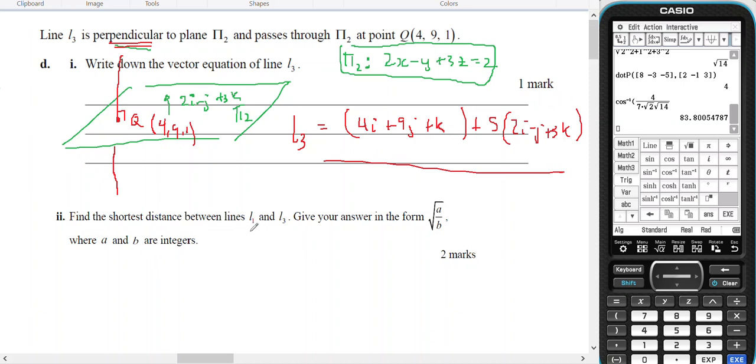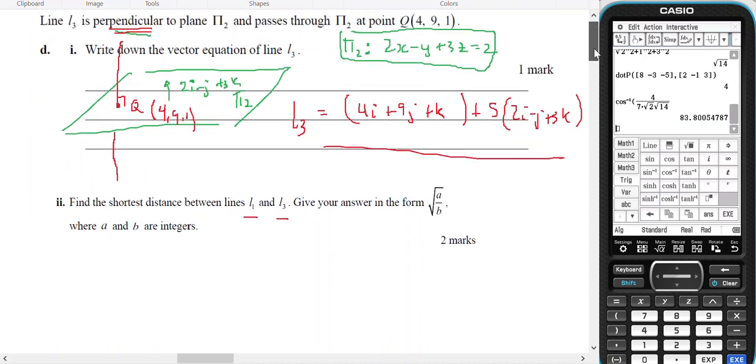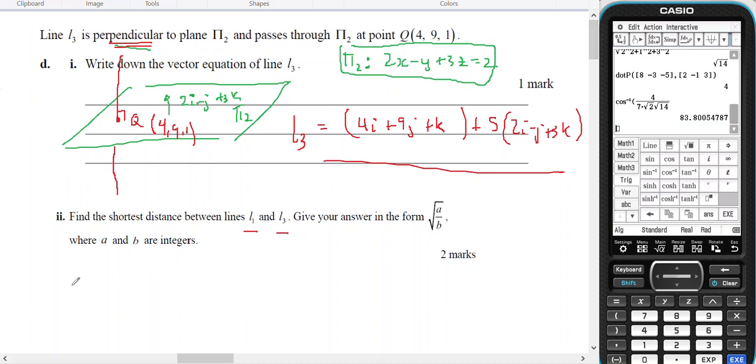Find the shortest distance between line 1 and line 3. Line 1 and line 3. So line 1 I know from way back when is going to equal i minus j plus 3k plus t times i plus 6j minus 2k. And I know that line 3 is 4i plus 9j plus k plus s times 2i minus j plus 3k.